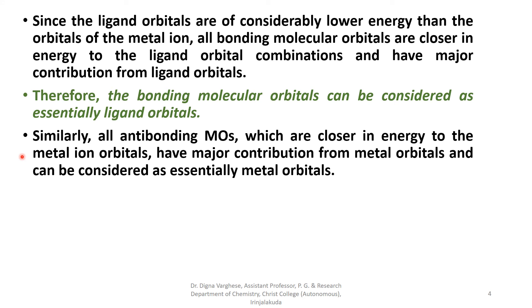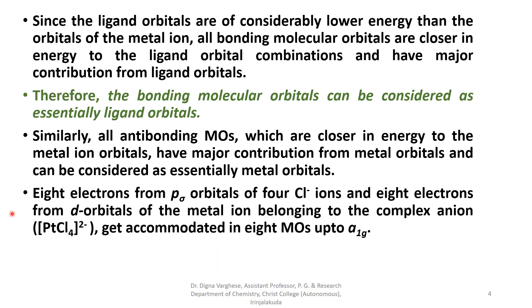Similarly, all the anti-bonding molecular orbitals which are closer in energy to the metal ion orbitals, have major contribution from metal orbitals and can be considered as essentially the metal orbitals. Eight electrons from p-sigma orbitals of 4Cl- and eight electrons from the d-orbitals of the metal ion forming to the complex anion get accommodated in eight molecular orbitals up to A1g.